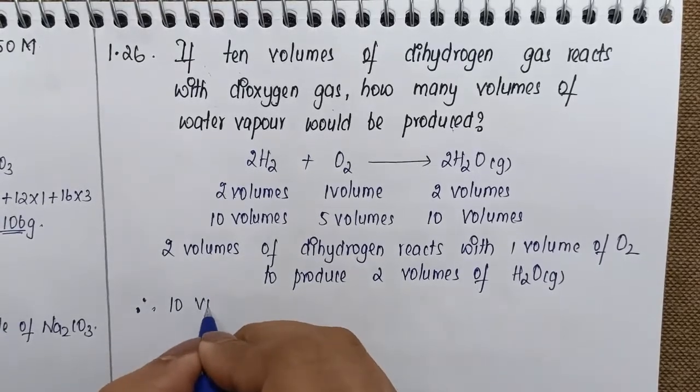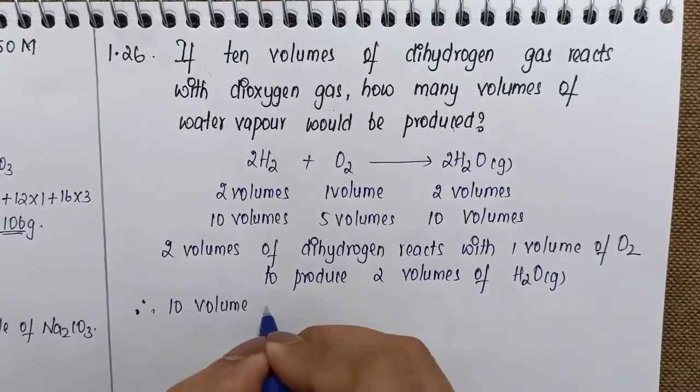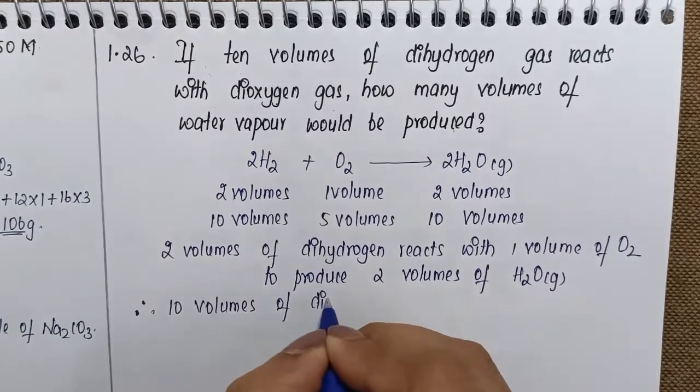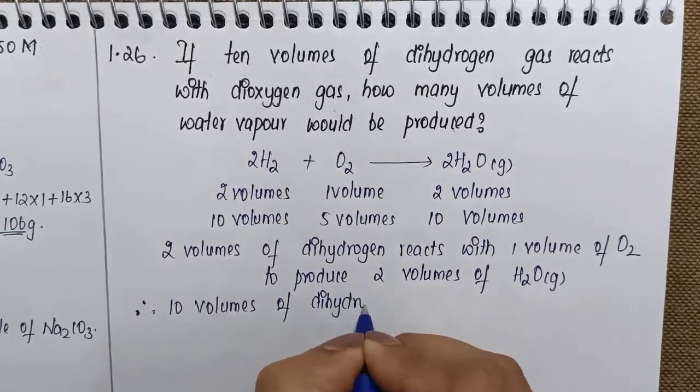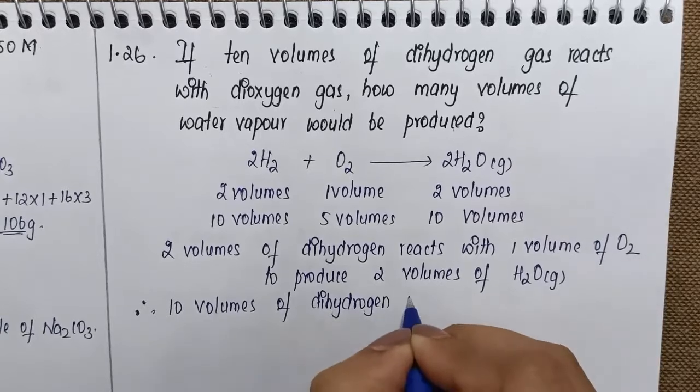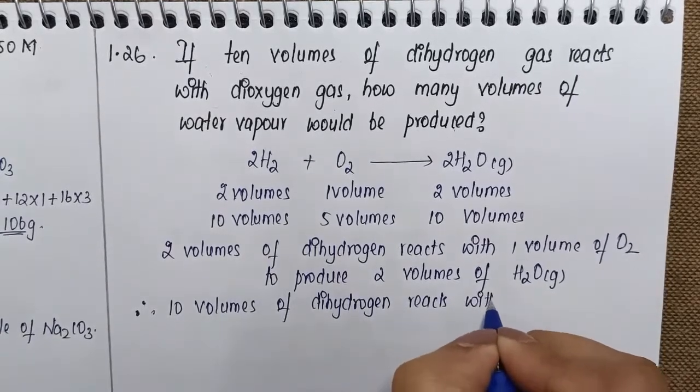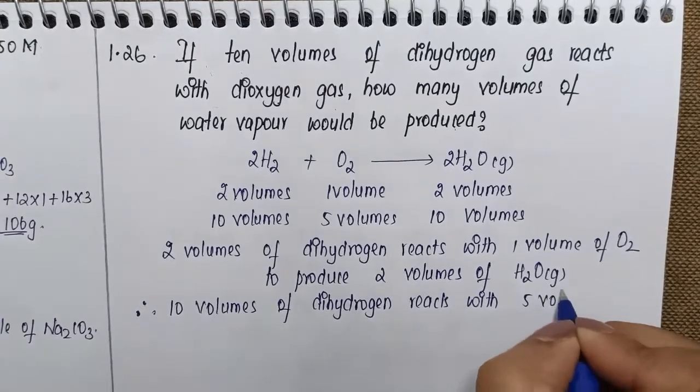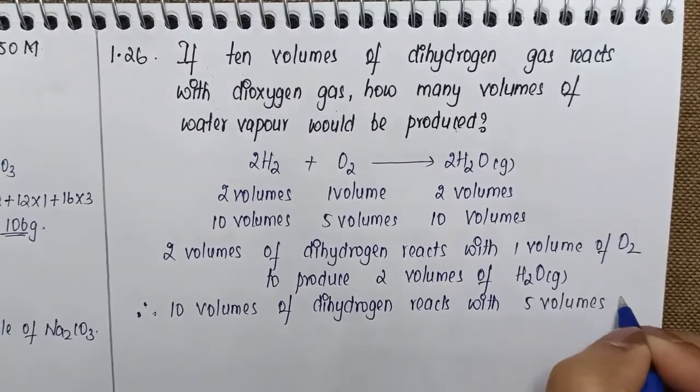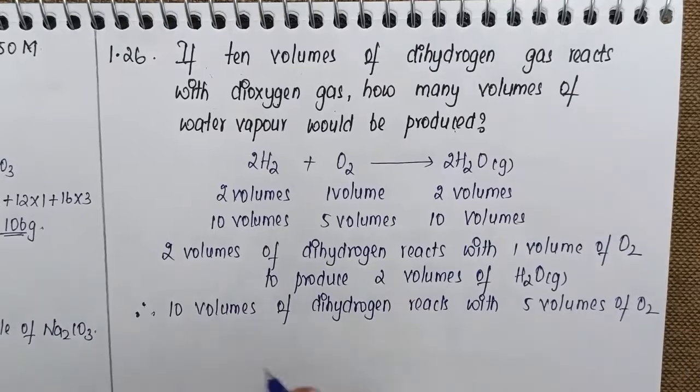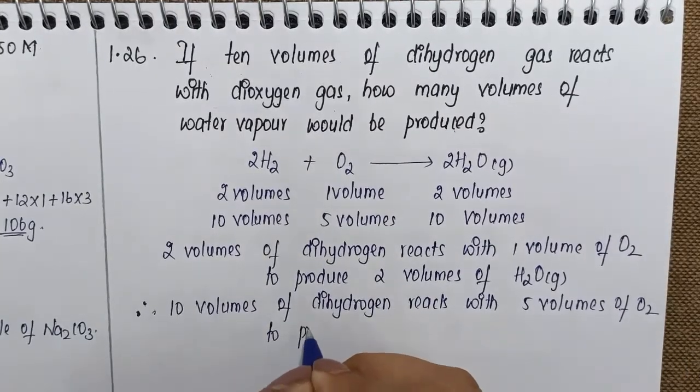10 volumes of dihydrogen reacts with 5 volumes of O₂ to produce 10 volumes of H₂O.